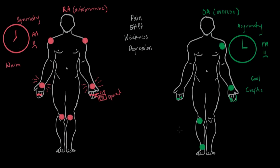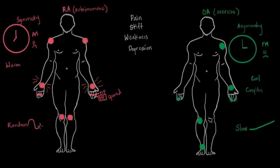Next, we'll talk about time of onset. OA involves overuse — we're born with plenty of cartilage that wears down over time — so the onset of osteoarthritis should be slow, taking years to develop, with severity gradually worsening over time. For rheumatoid arthritis, I wouldn't say fast is the right word since it's a chronic disease, but a better description might be random or cyclical. Patients may have flare-ups — better one moment, worse the next.